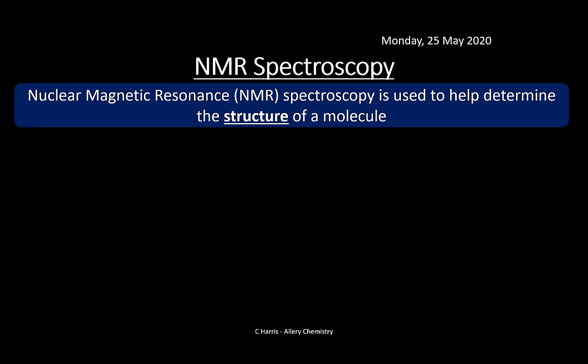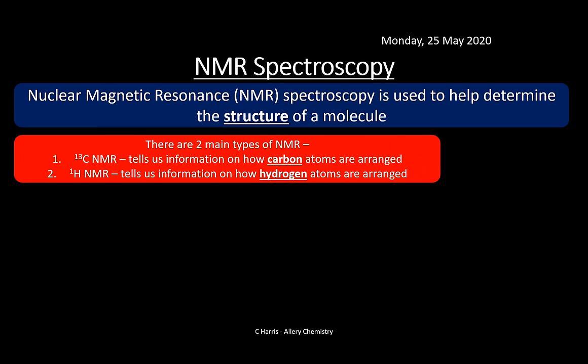I'll explain why medicine uses 'MRI' rather than 'NMR' towards the end of the video. For chemistry, we call it nuclear magnetic resonance — it's really useful for determining the structure of a molecule, unlike any other analytical technique. There are two main types for AQA: carbon-13 NMR, which looks at how carbon atoms are arranged, and proton NMR, which tells us how hydrogen atoms are arranged.